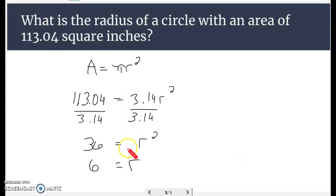Another way to think about this is taking the square root. When you take the square root of both sides of the equation, it comes down to 6 that way. So the right label on this one, since it was square inches, the radius would just be a linear measurement of 6 inches.